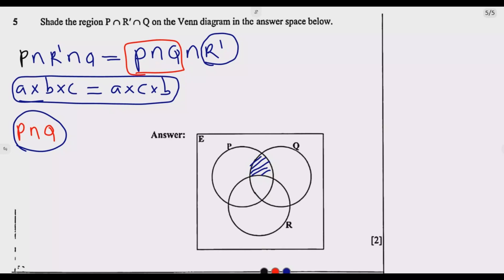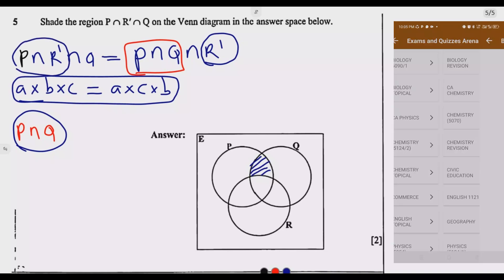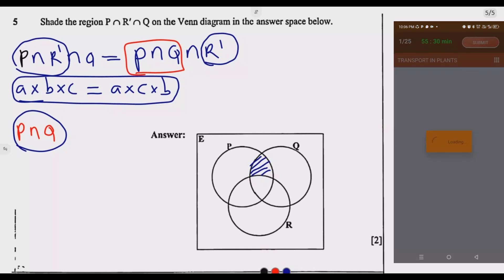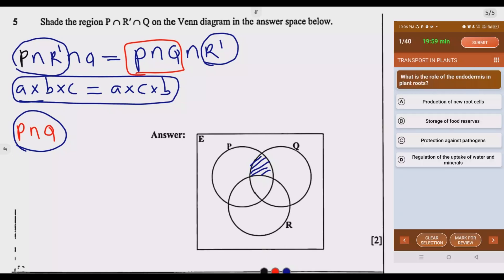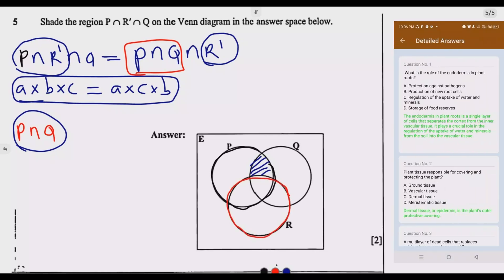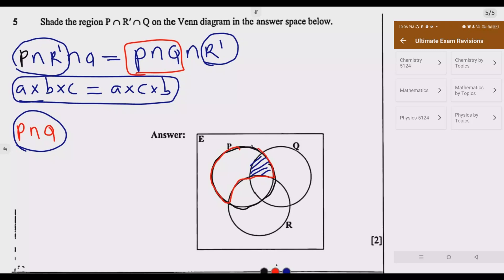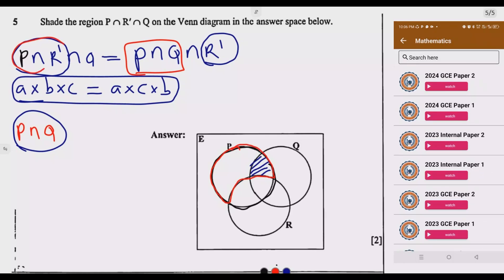This is the same as P intersection Q intersection R complement. If you wanted to go step by step, you would find what is in P, then compare it with what is not in R. At this point, you look at the entire set P, which is this one. Then in set P, you remove what is in R. What do you remain with? You remain with this set, this part.